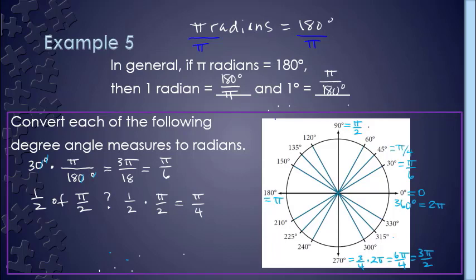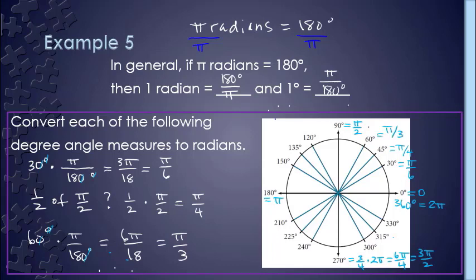Finally, we're left with the 60 degree angle, at least in the first quadrant. I'm going to take 60 degrees and multiply it by the ratio that will cancel my degrees. This is the same scenario as the 30 degree angle — I divide numerator and denominator both by 10 to get rid of the zeros, leaving me with 6 pi over 18. Dividing numerator and denominator by 6 gives me pi over 3. So 60 degrees is pi over 3.